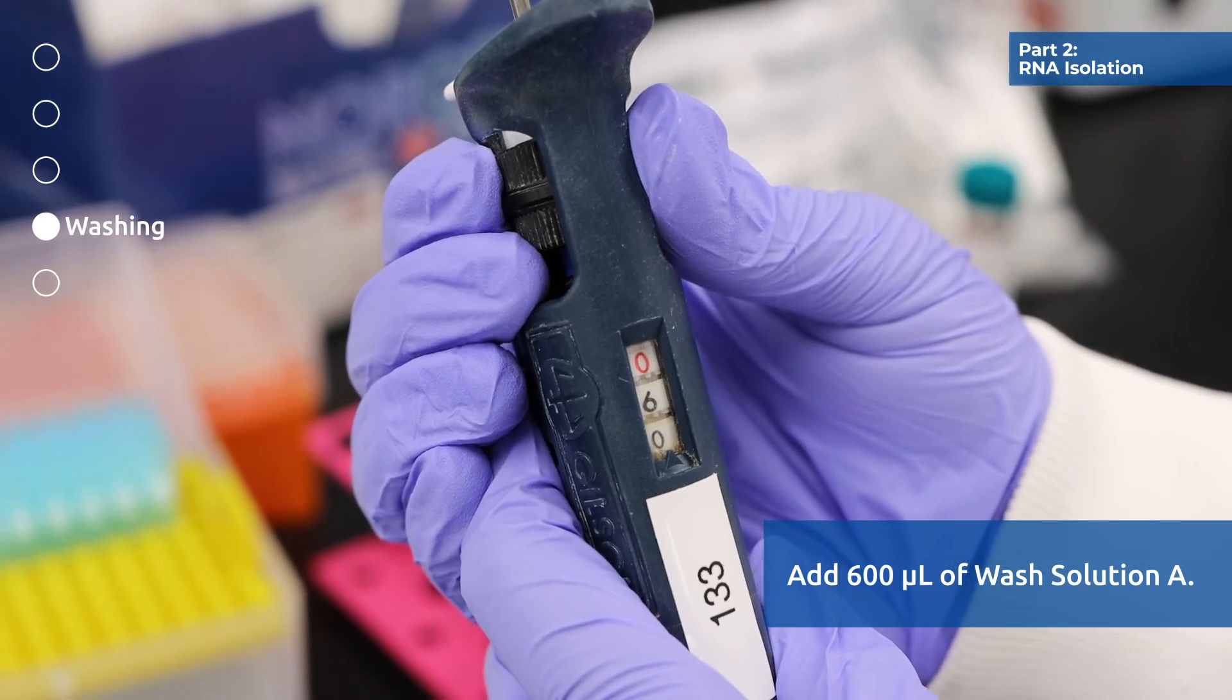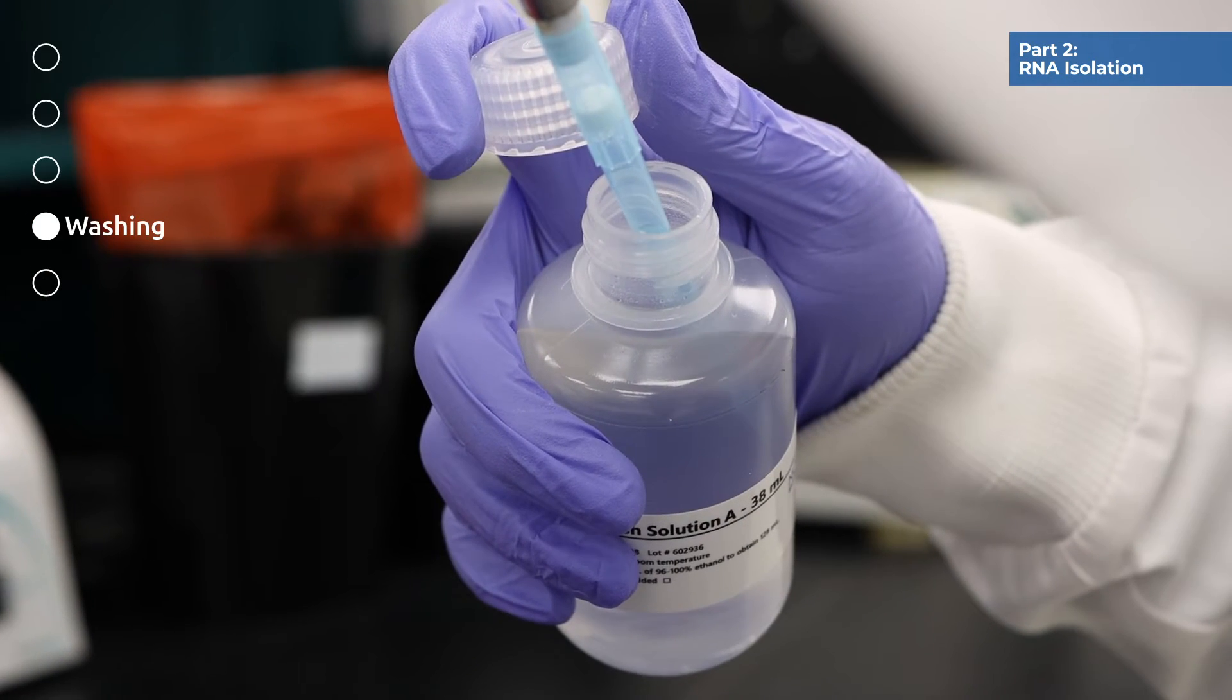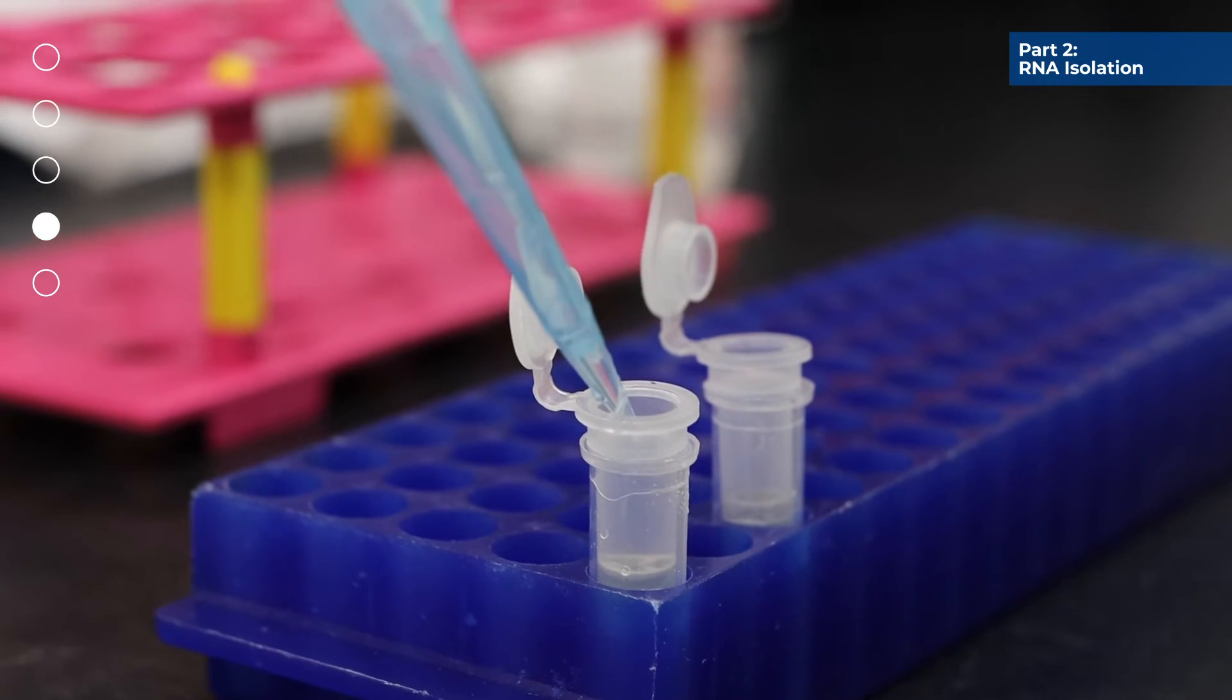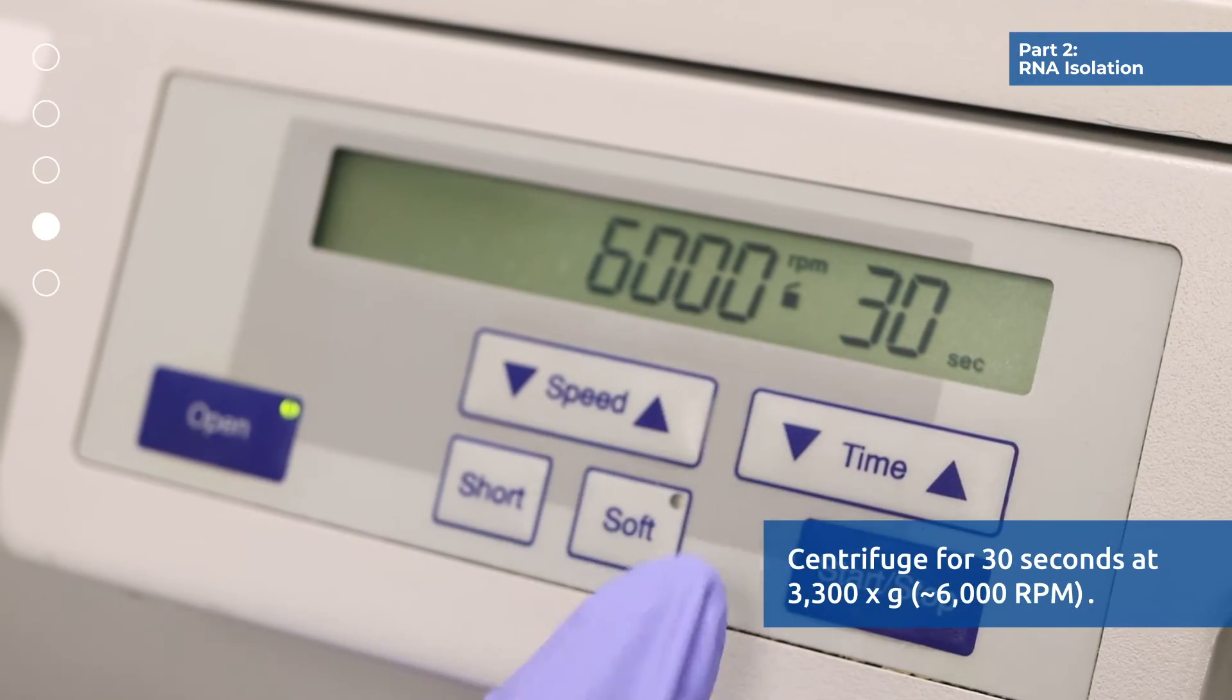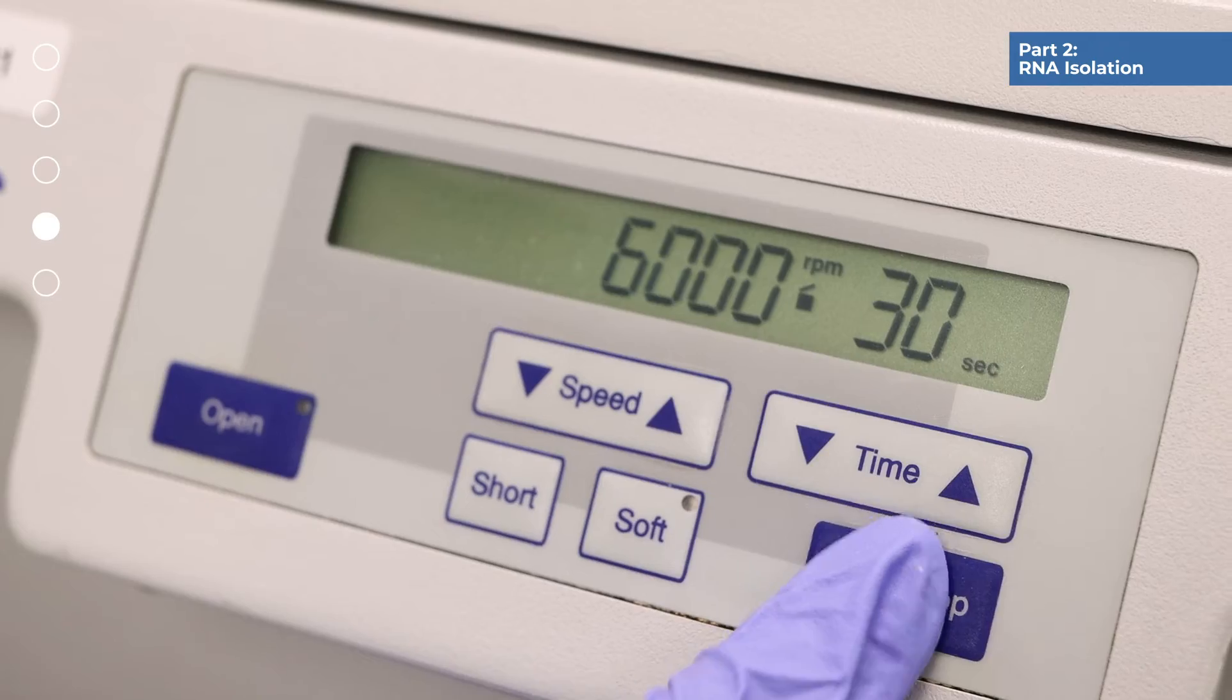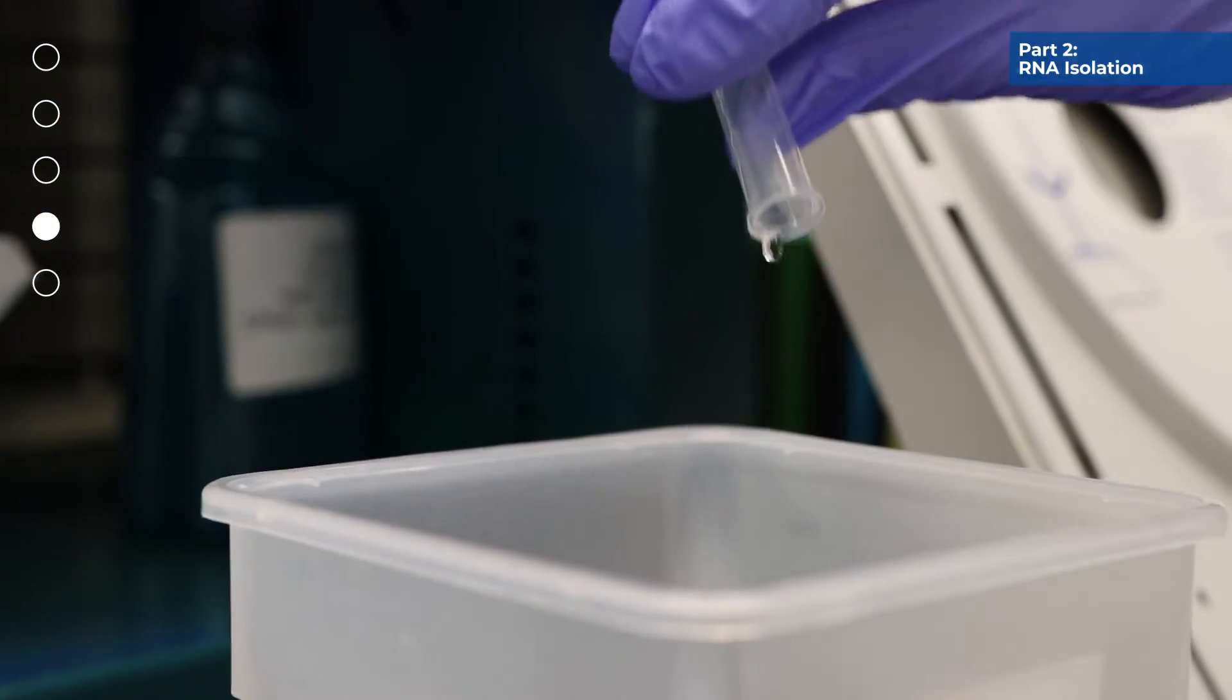Apply 600 microliters of wash solution A to the column and centrifuge for 30 seconds at 3300 g or 6000 rpm. Discard the flow-through and reassemble the spin column with its collection tube.